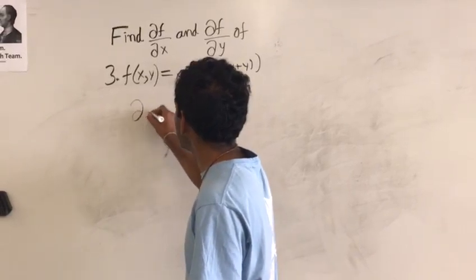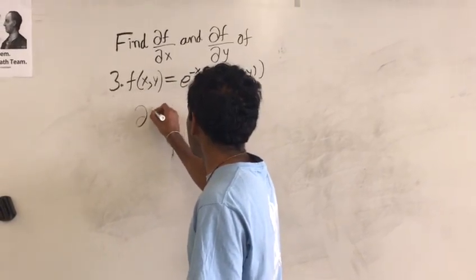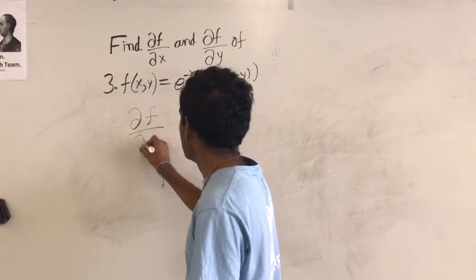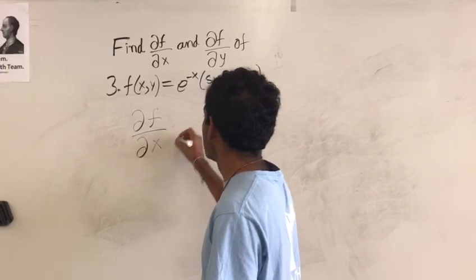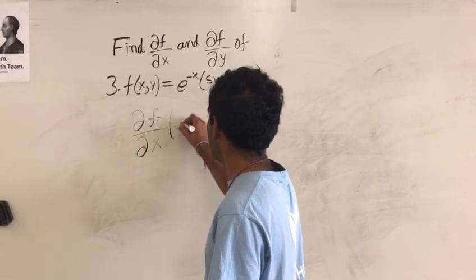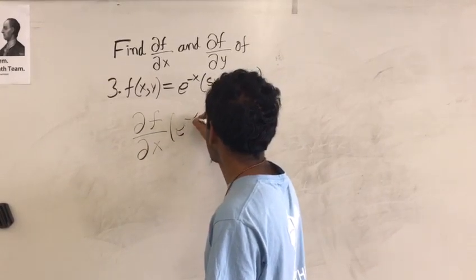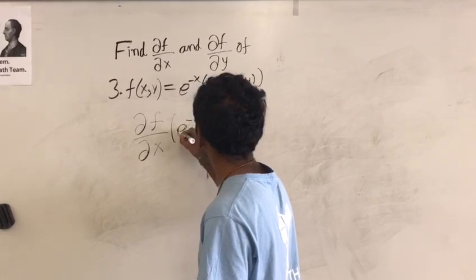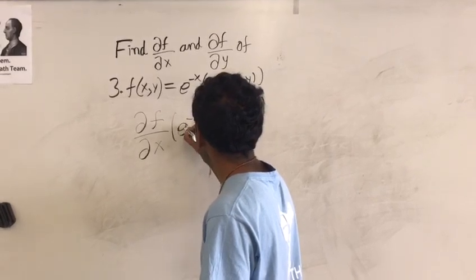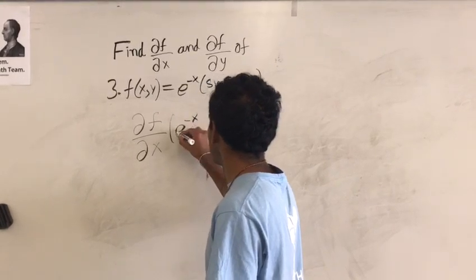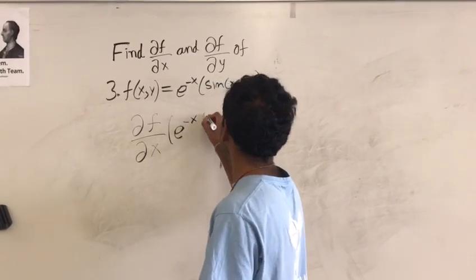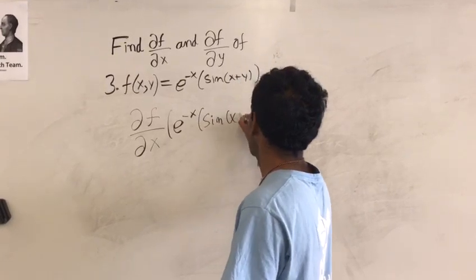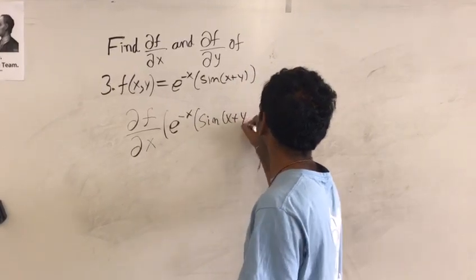d of f over d of x of e raised to the negative x times the sine of x plus y.